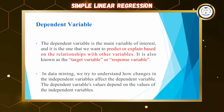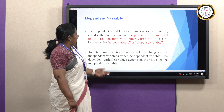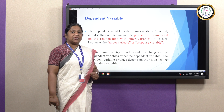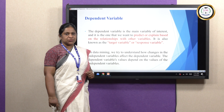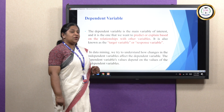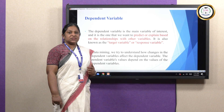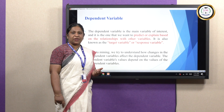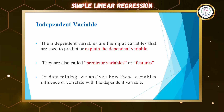The dependent variable is the main variable of interest, or the target variable, which we are going to predict using other variables. This variable is also called the target variable or the response variable. In data mining, we try to analyze how changes in the independent variable affect the dependent variable.